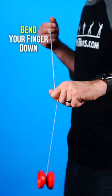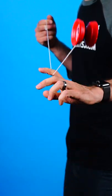Now, instead of letting the yoyo wrap around your finger, you are going to bend your finger down as it is about to pass by, and that way it won't wrap around your finger.